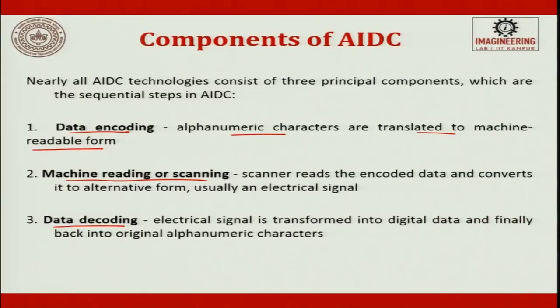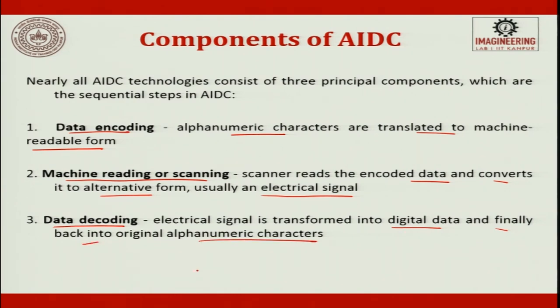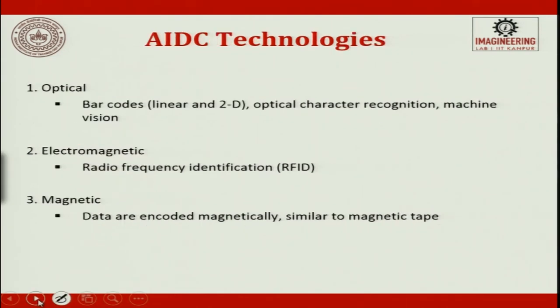Simple bar codes are one-dimensional barcodes. The scanner reads the encoded data and converts it into an alternative form, usually an electrical signal. This electrical signal is then transformed into digital data and finally back into the original alphanumeric characters. These are the three major components of an automatic identification system.